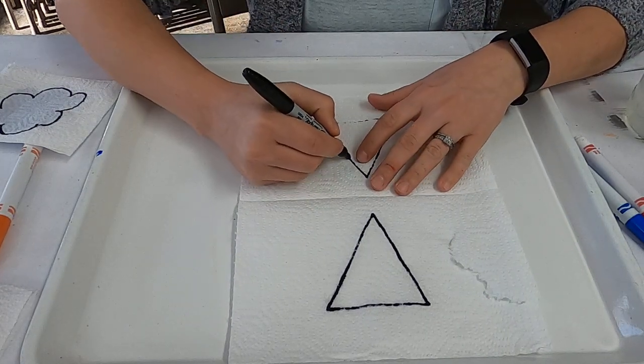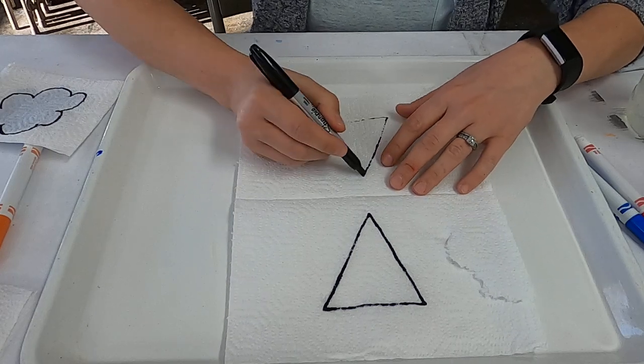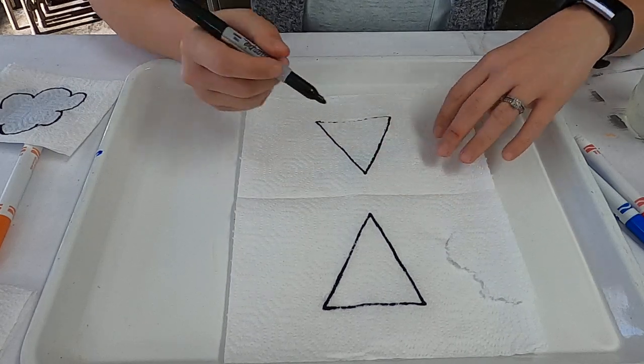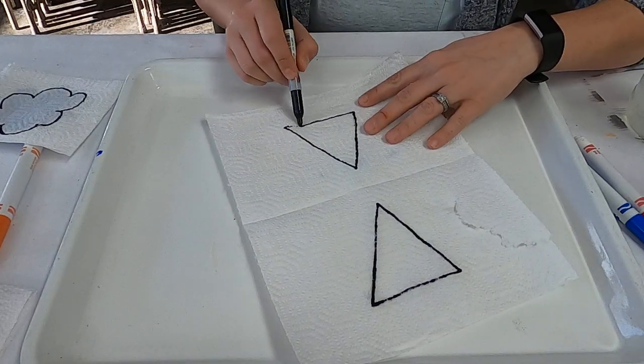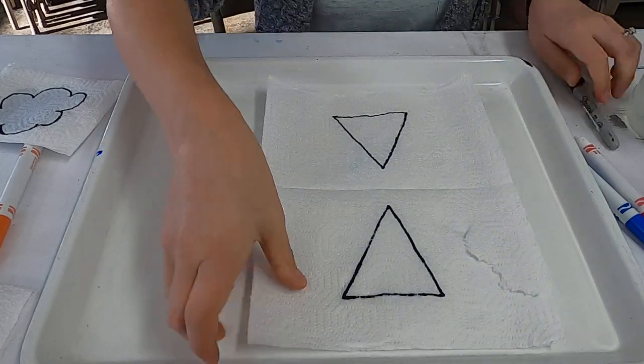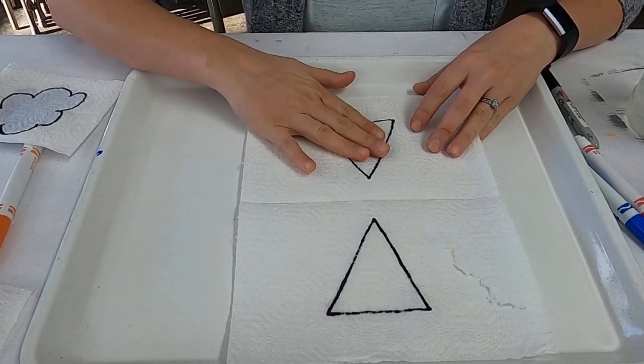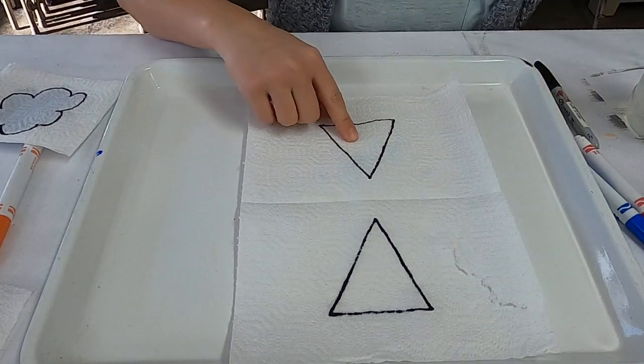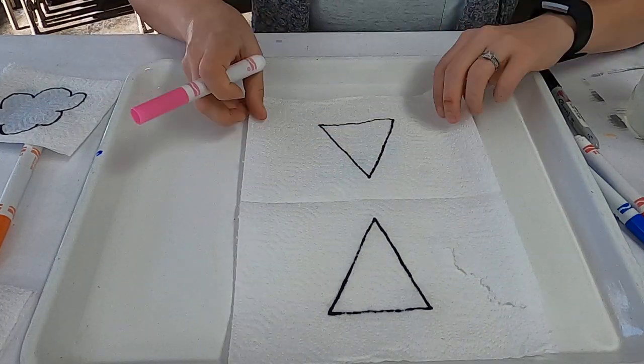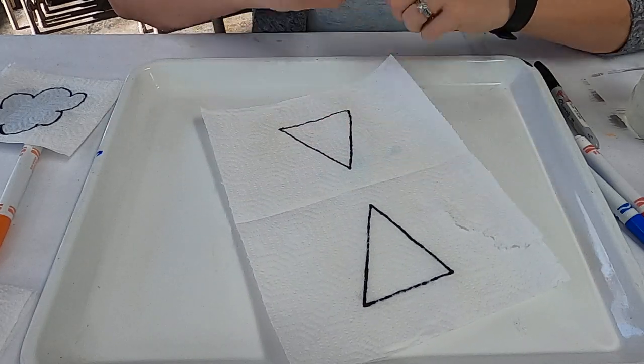So then what I'm going to do is, if you want to, you can just trace over what you did so you can see what you're doing. So for this one, so now this is our top part here. So when you open it up, this is the one that you want to color. So you take any colors that you want, and color inside of your lines.